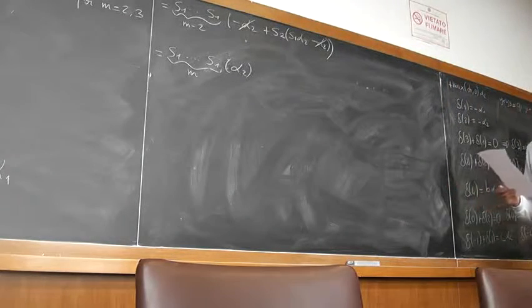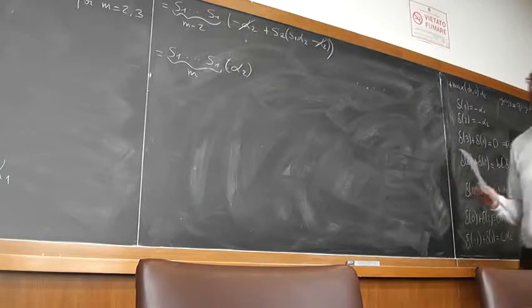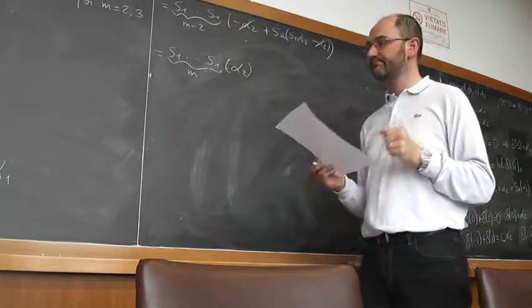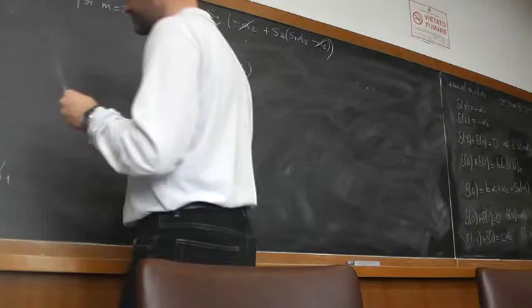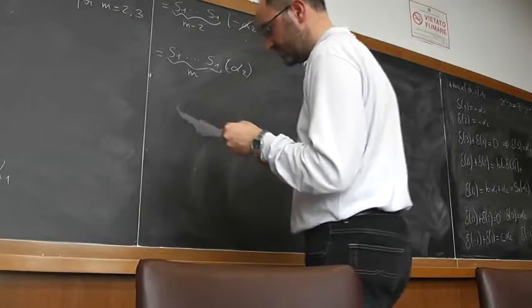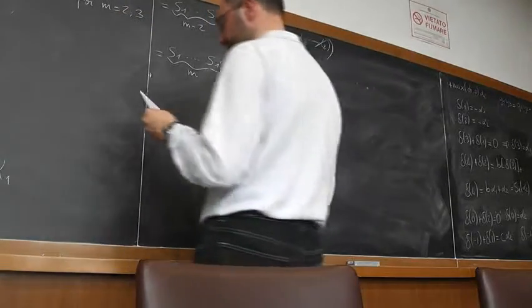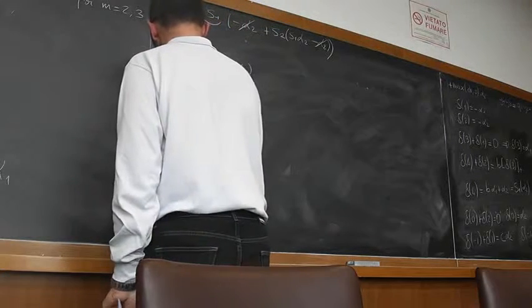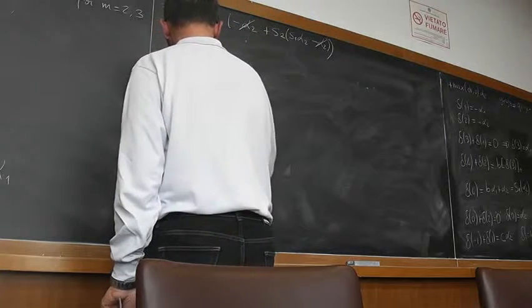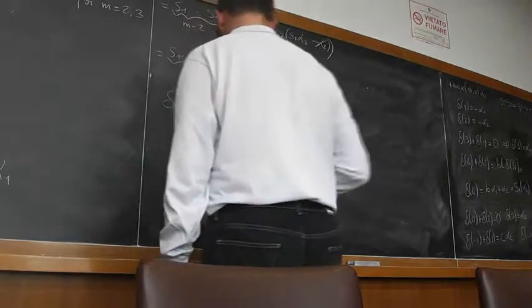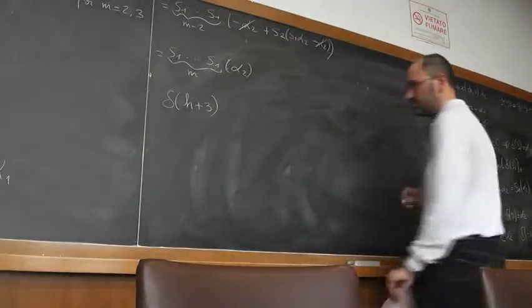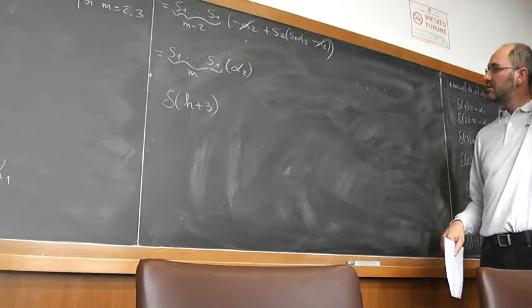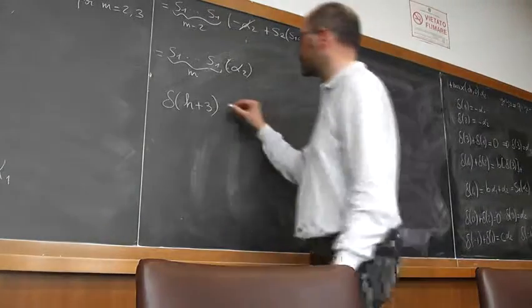Then we have to show the periodicity for the finite case. So in particular we have to show that delta H plus 3 is equal to delta 1.